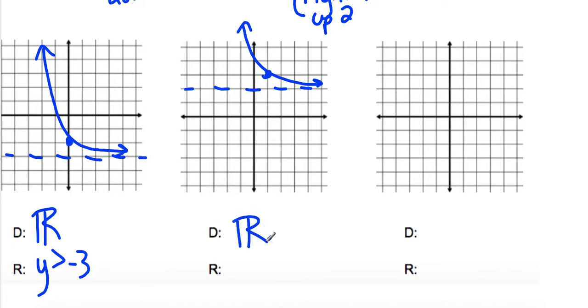Domain is all real numbers, and our range did change because we shifted it up 2, so we're greater than 2.